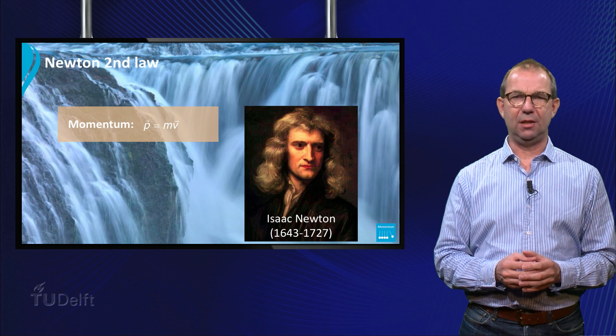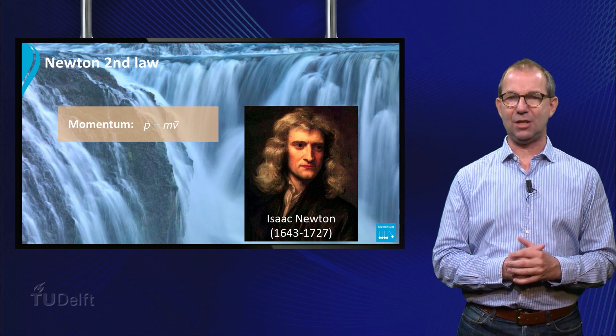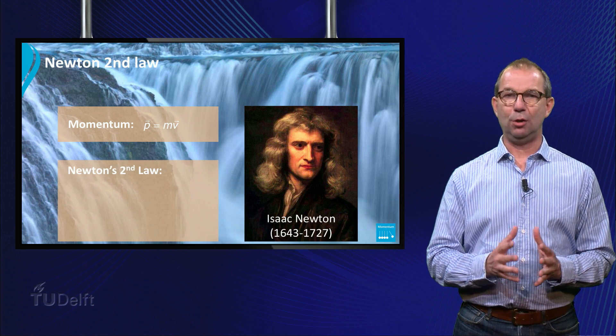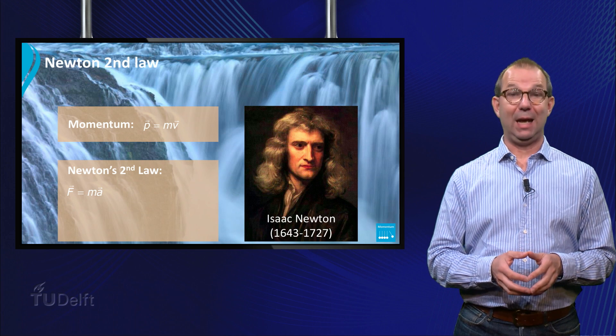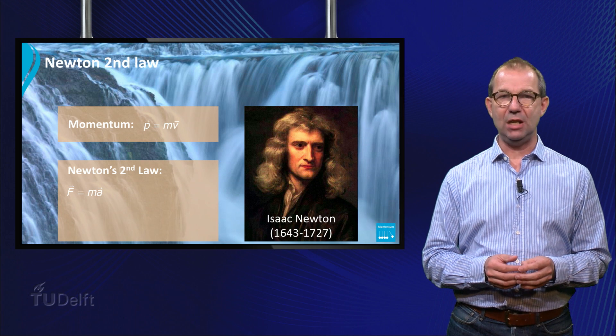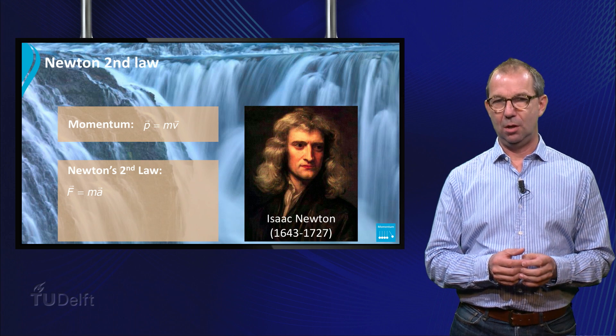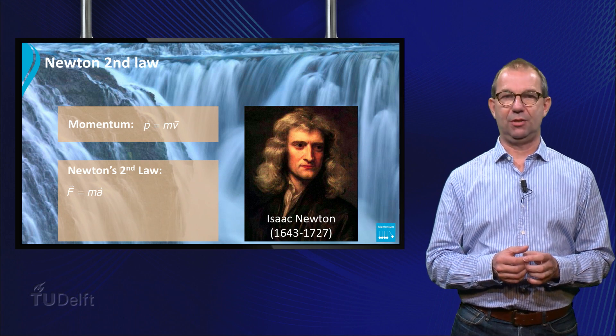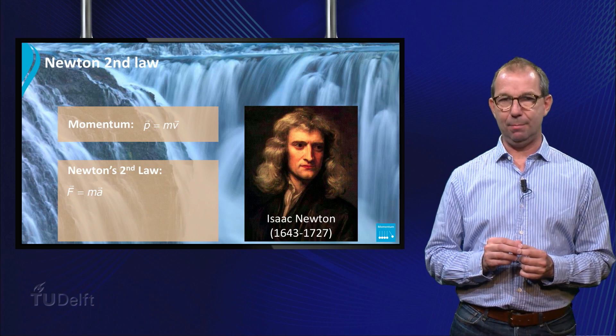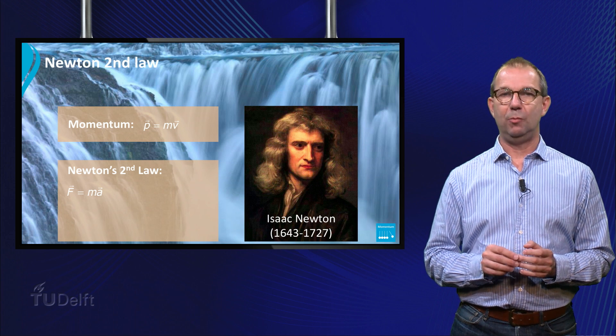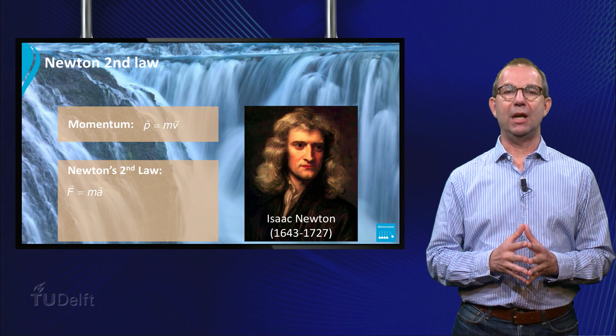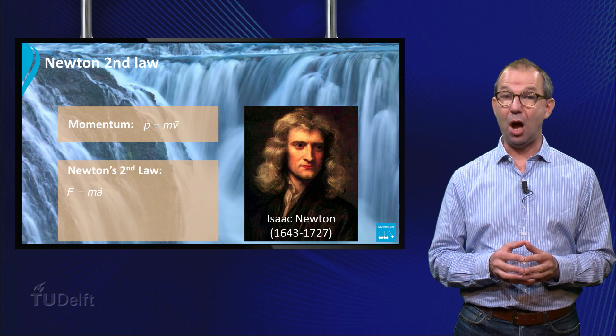Isaac Newton formulated his three laws of classical mechanics more than 300 years ago. His second law, known to many as F equals m times A, couples the change of the motion of an object to the forces acting on it. It says that if a net force is applied to a mass m, that mass m will change its velocity, as acceleration is the change of velocity with time.